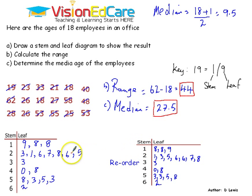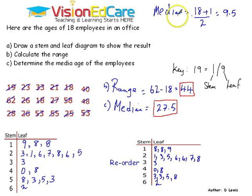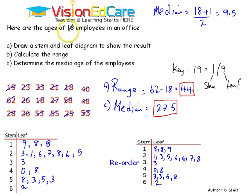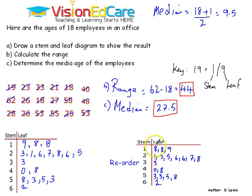That is how you determine the median from the stem and leaf diagram — you find the median position. For example, if there were 20 people in the survey, you would have 20 plus 1 divided by 2. Because there are 18 people here, you have 18 plus 1 divided by 2, and that gives you the median position. Then you find that position from your table.